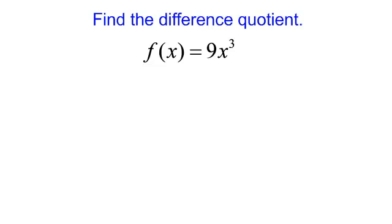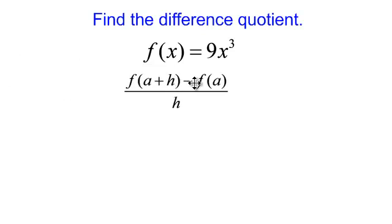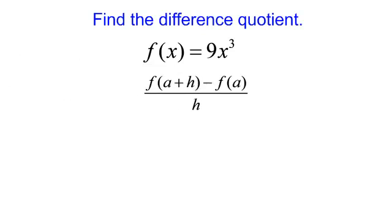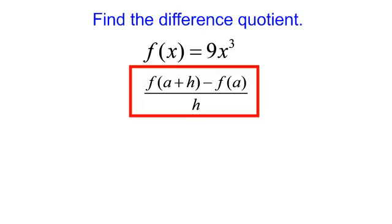Find the difference quotient. We have the function f of x equals 9x to the third. The formula for the difference quotient is f of a plus h minus f at a, all of that divided by h. So let's get to work.